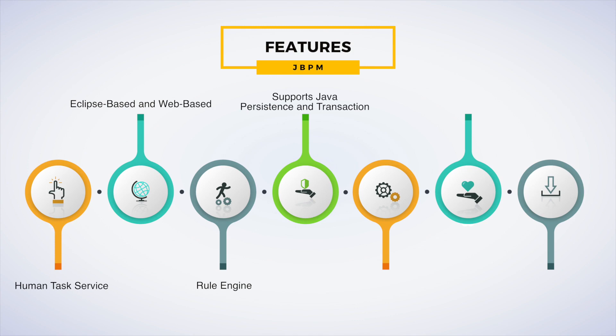JTA is a transaction API which handles the transaction behavior across multiple databases. UI Tools in JBPM can be used in the design phase itself. Lightweight: JBPM is fully open source, written in Java language and is lightweight. Supports BPMN2: It focuses on BPMN2, which stands for Business Process Model and Notification, a process definition language. This is a global standard for process modeling and has been widely used for having the core components of a business IT alignment.